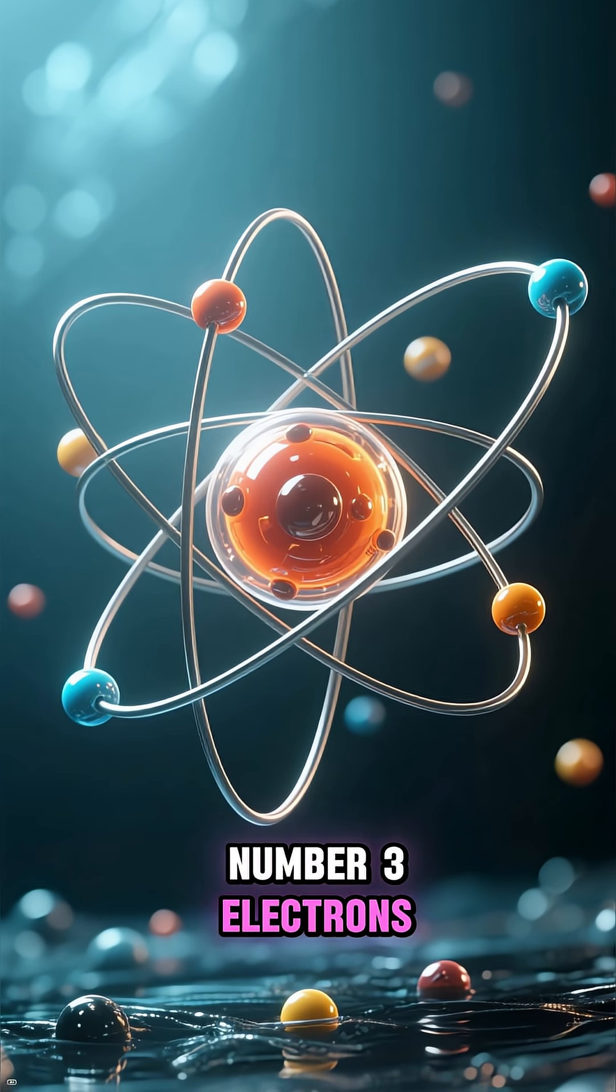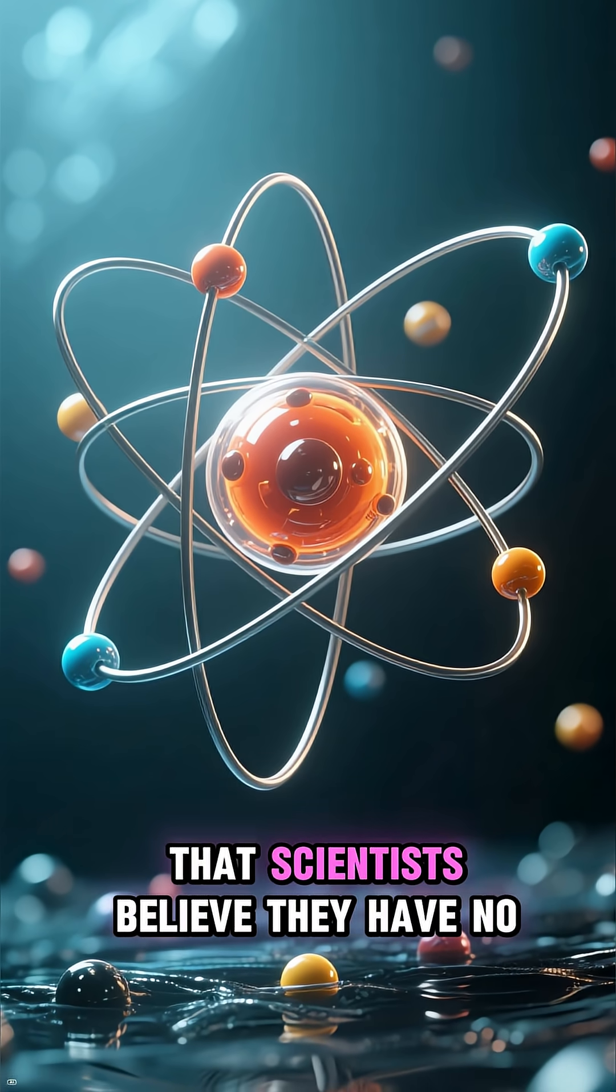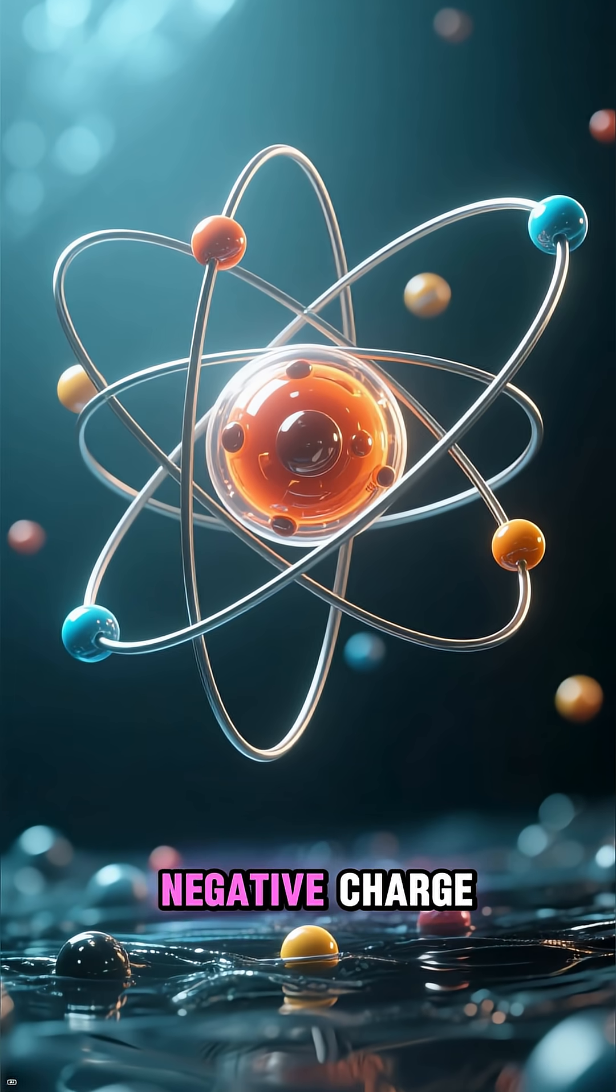Number 3: Electrons. Orbiting around the nucleus, electrons are so fundamental that scientists believe they have no size at all. They're just points of pure negative charge.